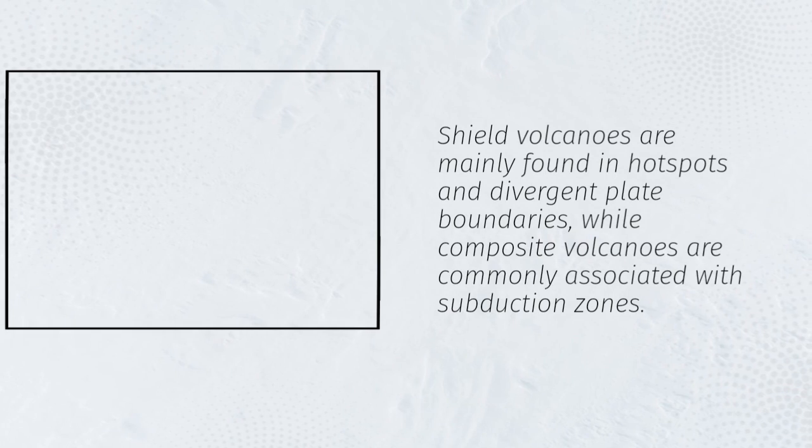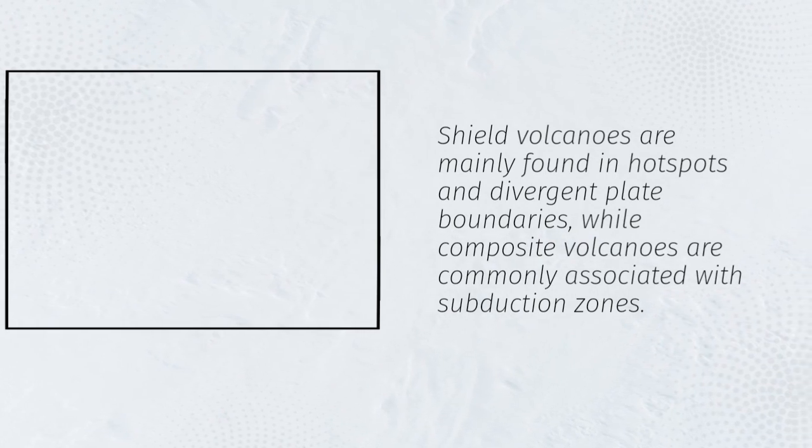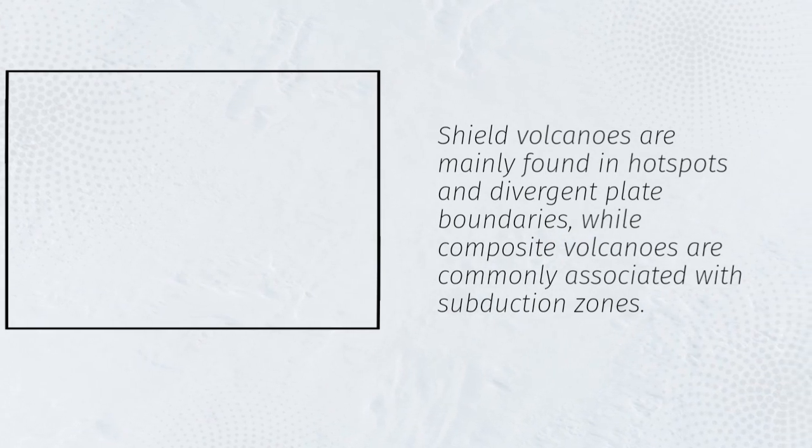Shield volcanoes are mainly found in hot spots and divergent plate boundaries, while composite volcanoes are commonly associated with subduction zones.